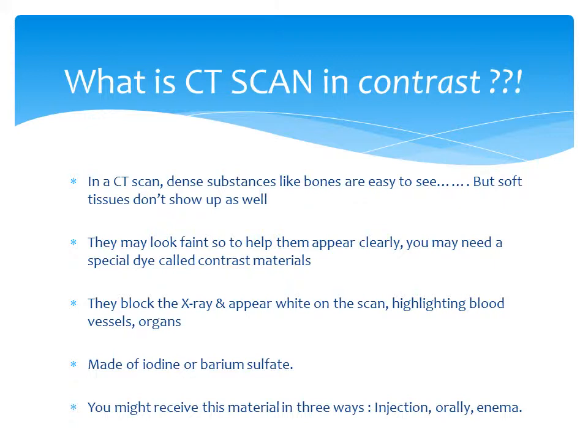What is a CT scan with contrast? In a CT scan, dense substances like bone are easy to see, but soft tissues do not show up as well — they may look faint. To help them appear clearly, you may need a special dye called contrast material. It blocks the x-ray and appears white on the scan, highlighting blood vessels and organs. Contrast material is made of iodine and barium sulphate.